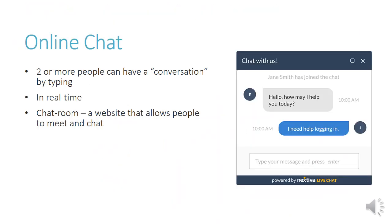Online chat is where two or more people can have a conversation by typing. Instead of talking with their voices, they type to each other in real-time — you type, then wait for the person's answer. This is often done on websites for companies where you can talk to them if you want more details about whatever they're selling. There are also chat rooms, which are websites that allow people to meet and chat, usually based on a particular topic.